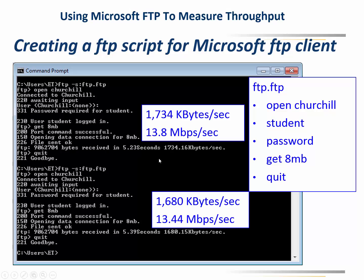In the real world you don't run the test once and walk away. I run it a minimum of five times, drop the low, drop the high, and average the three remaining. In this case the first test shows 1,734 kilobytes — multiply by 8 and you get 13.8 megabits per second, because these are file sizes in bytes and we want bits since we're network people. The second test was 13.44, so they were relatively close.